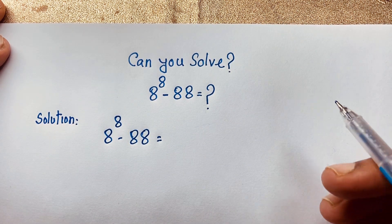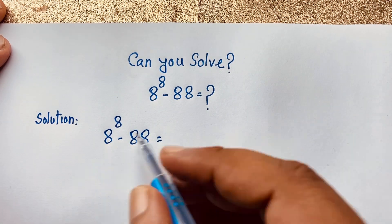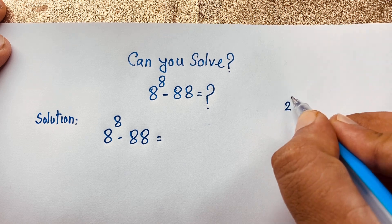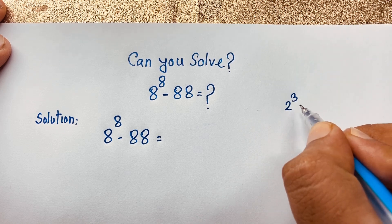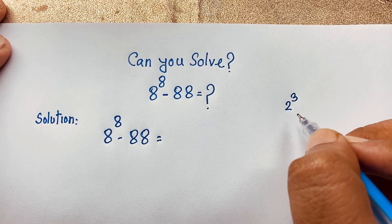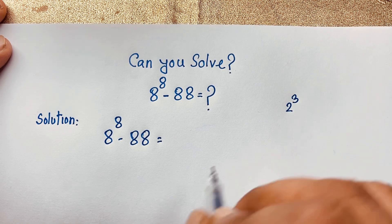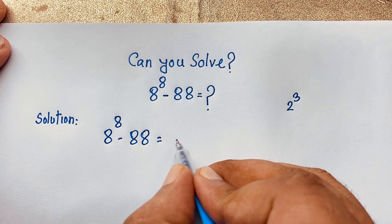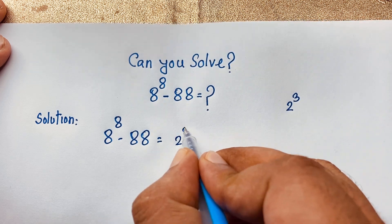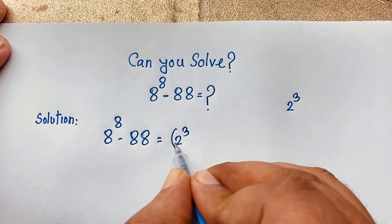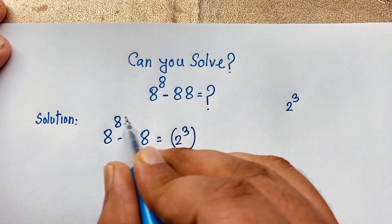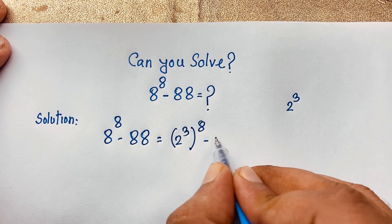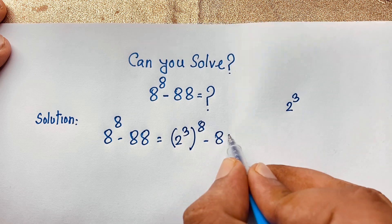Now at this moment, you know that this 8 it will be 2 to the power 3. 2 times 2 times 2 it will be 8. So you can say this 8 it will be 2 to the power 3, bracket power is 8, minus 88.